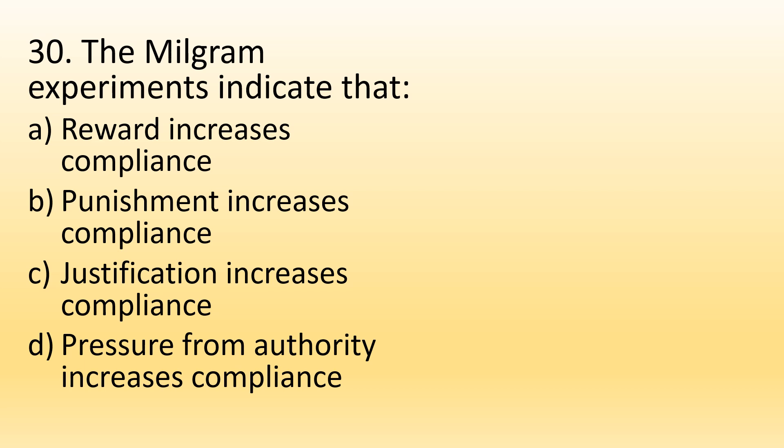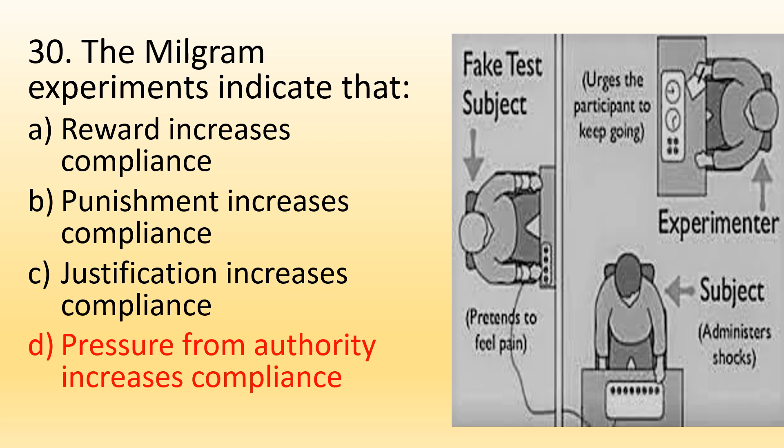Number 30. The Milgram experiment indicates that: Option A, Reward increases compliance; Option B, Punishment increases compliance; Option C, Justification increases compliance; Option D, Pressure from authority increases compliance. The right option is Option D, Pressure from authority increases compliance.